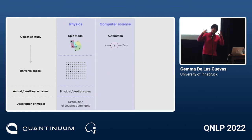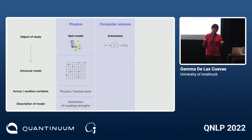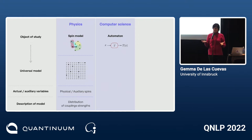The best understood and best example of this type of universality are universal Turing machines, which are a cornerstone of theoretical and practical computer science. What goes on there is that you have a model of computation — take a Turing machine, but you could take any other.